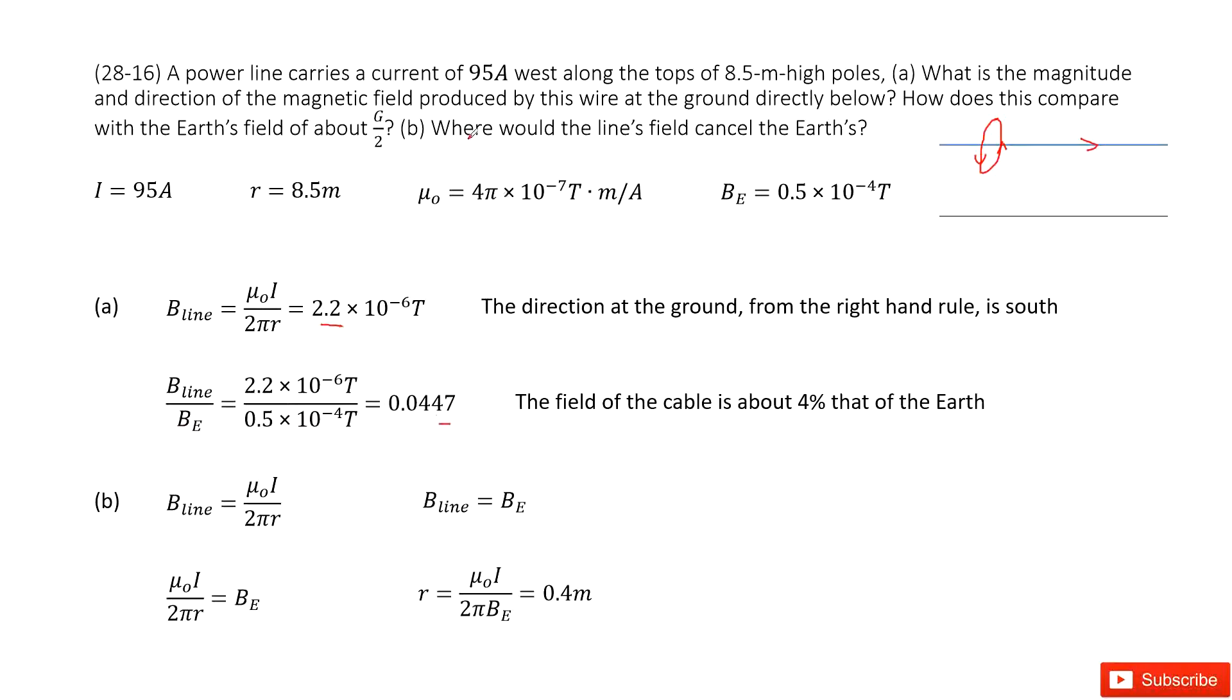The next one asks you, where would the line field cancel the Earth's magnetic field? So that means at one point, the magnitude of the wire magnetic field and Earth's magnetic field are just equal in opposite direction. So there we can consider they are equal in magnitude.